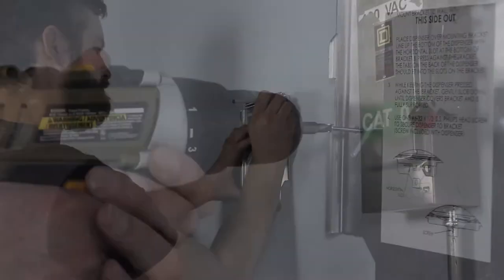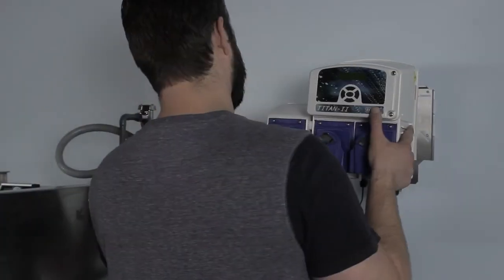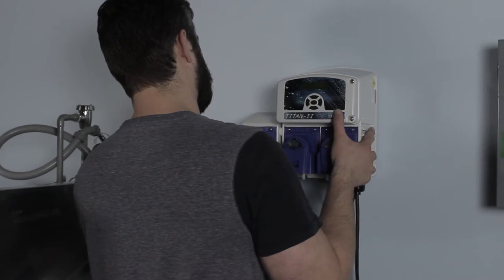The next step is to install the chemical pumps and chemical pump tubing. Some dishwashers have built-in pumps, so if this is the case with yours, go ahead and skip to the next step.